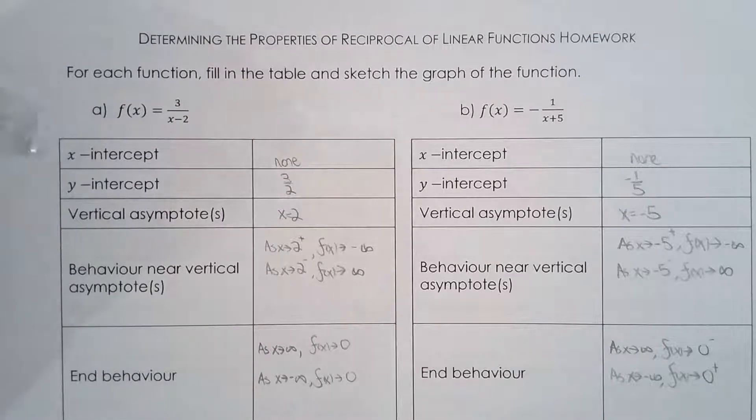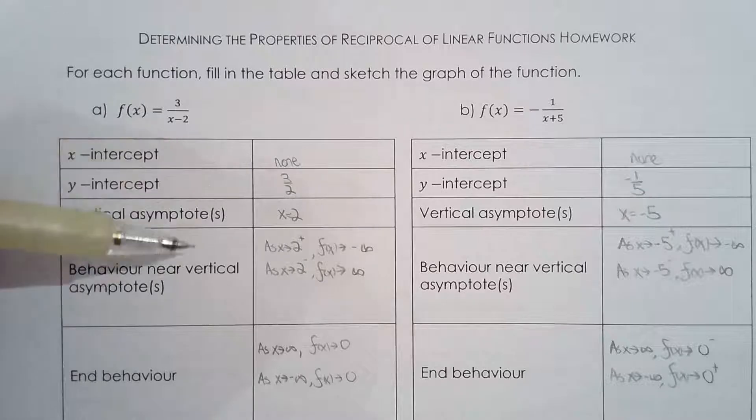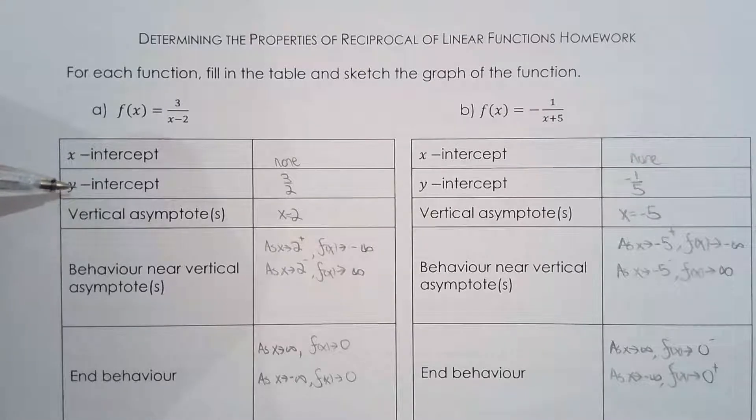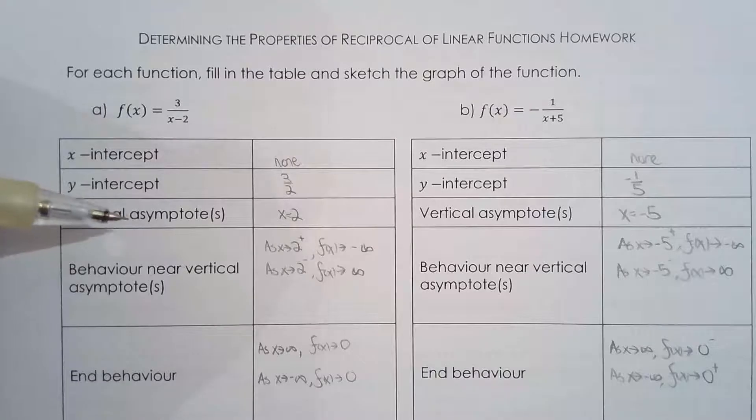So that's what I did. I found the asymptotes and the intercepts, which is very easy to find. To find x and y intercept should not take you more than 20 seconds. Finding the vertical asymptote should not take you more than 10 seconds.